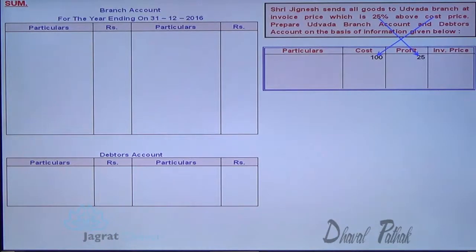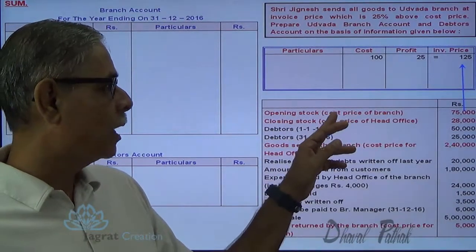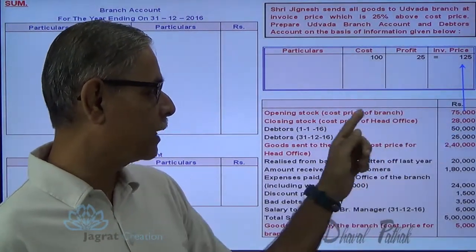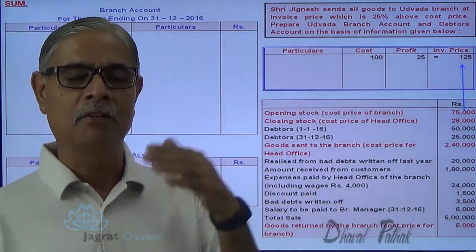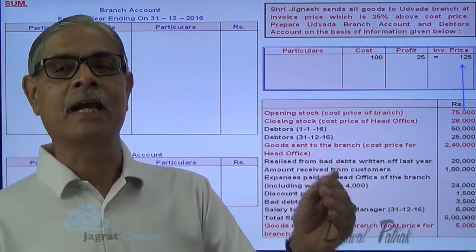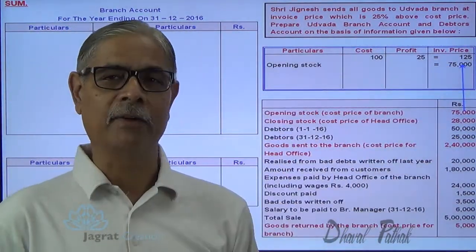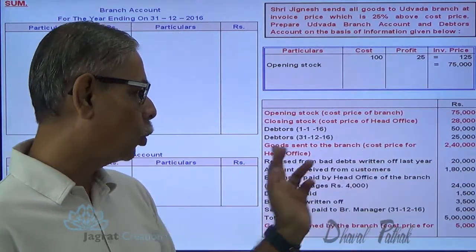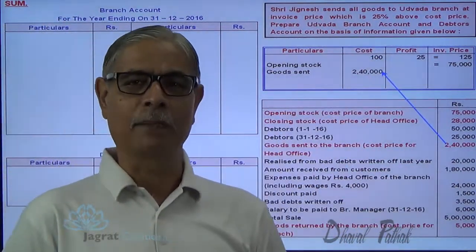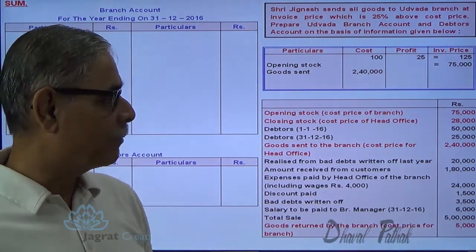Let me prepare a working note. If cost is 100, profit is 25, invoice price is 125. This is the relationship between cost and invoice price. In this sum I am given opening stock at cost price to branch. So 75,000 is the invoice price because cost to branch is the invoice price. So this 75,000 I will record under 125. For goods sent to branch, 2,40,000 is the cost price of head office, so I will write in the cost column. Goods returned by the branch at cost price of branch - so I will write 5,000 in the invoice price column.